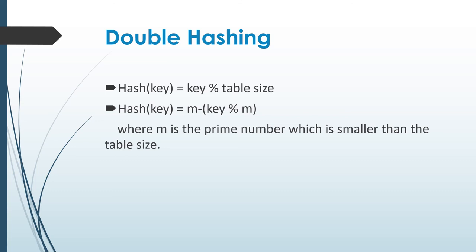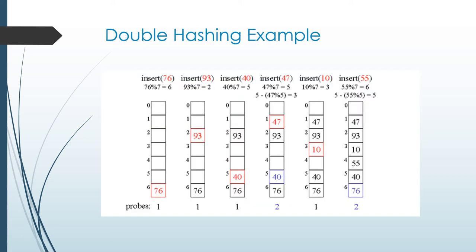Next is double hashing. Here we use the formulas: hash(key) = key mod table size, and hash(key) = m − (key mod m), where m is a prime number smaller than the table size. The table size is 7. Insert 76: 76 mod 7 equal to 6, so 76 is placed at key value 6. Insert 93: 93 mod 7 equal to 2, so 93 is placed at key value 2. Insert 40: 40 mod 7 equal to 5, so 40 is placed at key value 5.